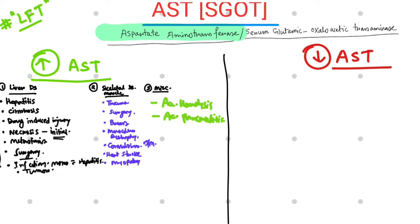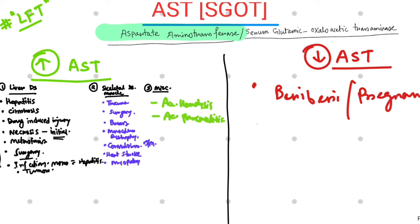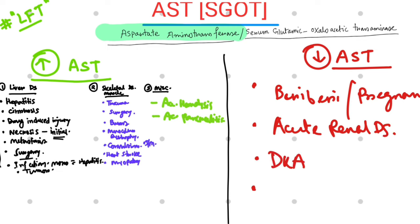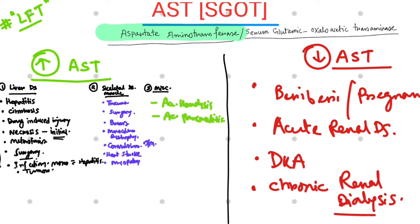Causes of decreased AST levels include pyridoxine deficiency as seen in beriberi and pregnancy, acute renal disease, diabetic ketoacidosis, and chronic renal dialysis patients. These conditions are associated with decreased AST levels in the blood. That's it — thank you for watching.